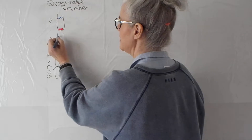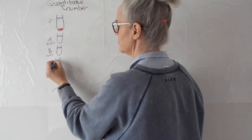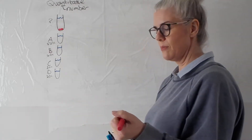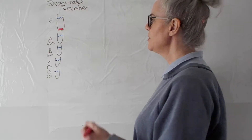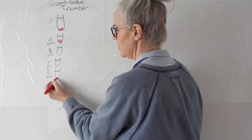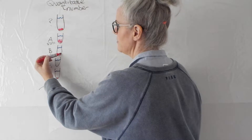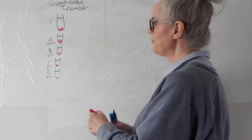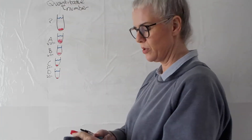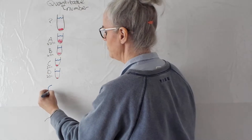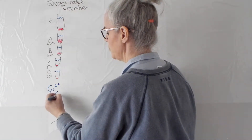You add Benedict's to all of these samples and you will get a precipitate. The precipitate you get is in proportion to how much sugar is there. If you have more sugar, you will get more precipitate. If you have less sugar, you will get less precipitate. That precipitate is formed from copper — copper two plus is reduced to copper plus.